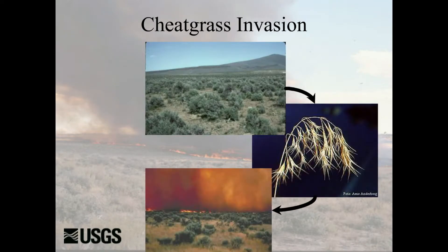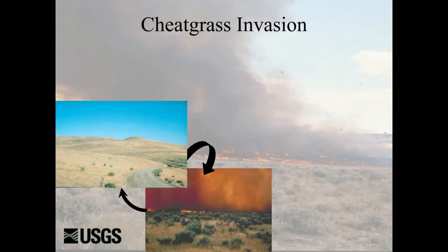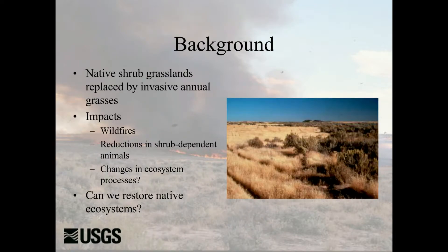When cheatgrass invades this system, we have fires. And instead of having the system come back into that mixture of shrubs and grasses, we're into a vicious cycle. The native shrub-grassland system ends up being replaced by invasive grasses, and you get greater amounts of wildfires — larger, more frequent — with changes occurring in ecosystem processes. Can we then restore native plants in these systems if we have changes occurring in the processes that move water and nutrients through them? That's the question we're trying to understand with some of the work we've been doing recently.